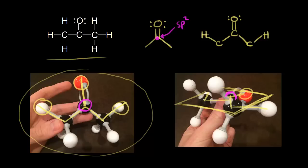With sp2 hybridization we would expect trigonal planar geometry - everything to be planar. The atoms connected to the carbon in magenta, those carbons and this oxygen, are all in the same plane.